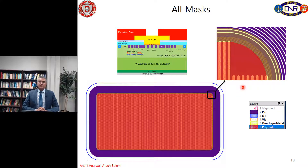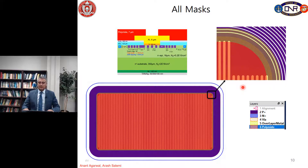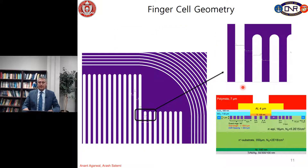Now I'm going to talk about different cell geometries and the effect of these different cell geometries on the on-state and off-state characteristics. The first geometry I'm explaining is the finger cell geometry, where we have fingers in parallel with a width of 2 micrometers and a distance of 2.5 micrometers, as we simulated before.